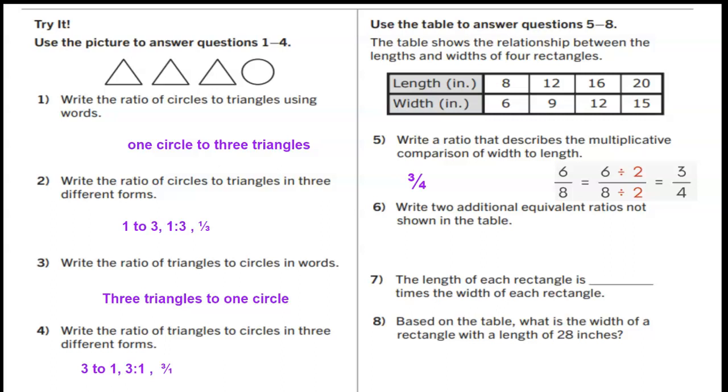Write two additional equivalent ratios not shown in the table. Pause the video and write down some options. Here are some options that you can use as equivalent ratios. Your answers may vary, but please make sure that it simplifies to the same problem. Width will be 18 and length will be 24. So we can write that as 18 to 24.